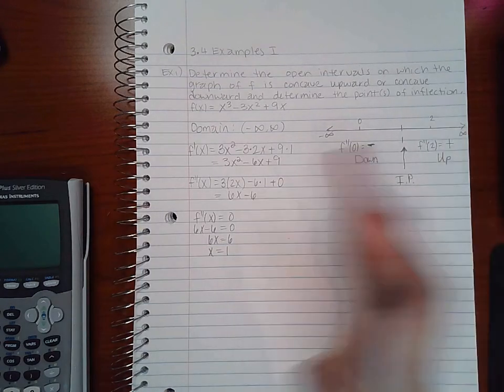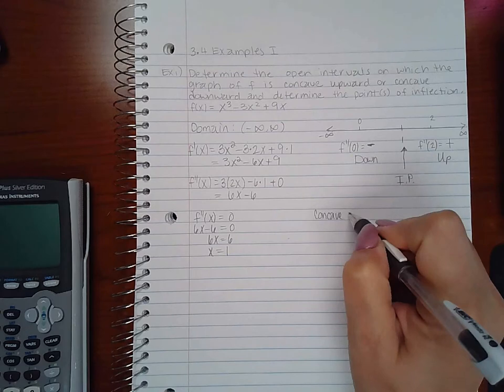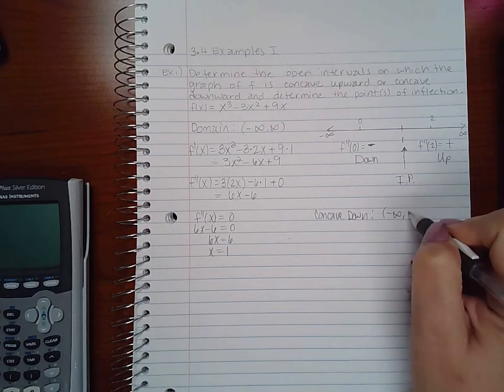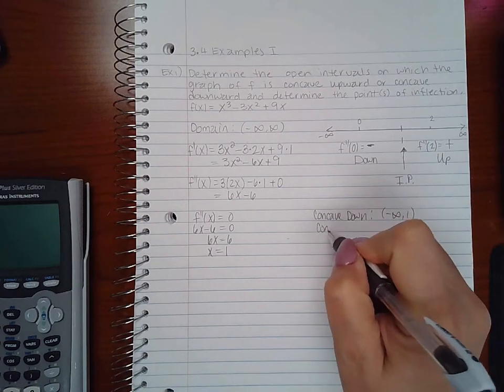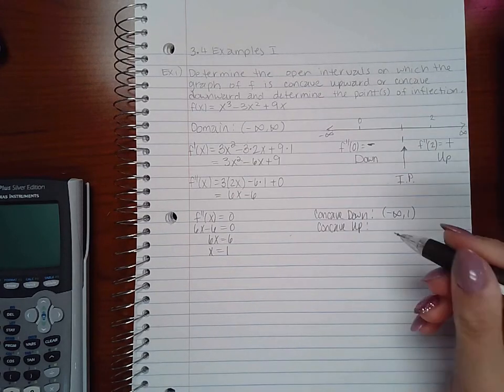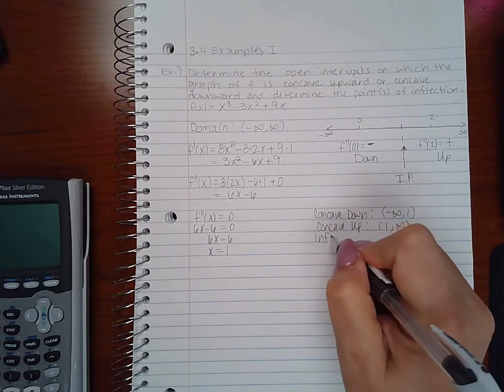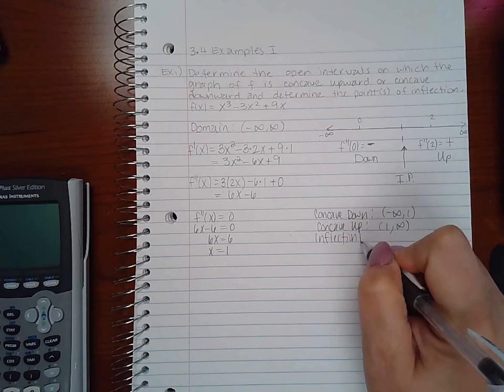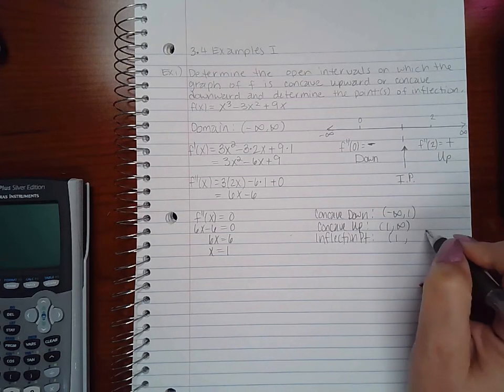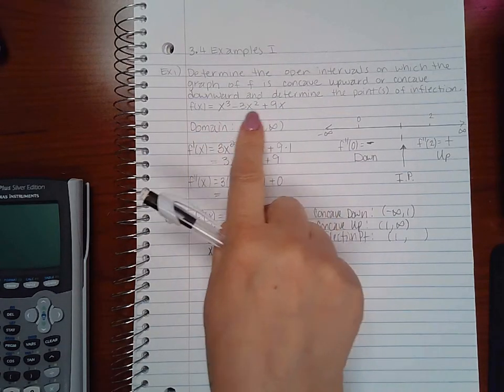So if I summarize my information, I have concave down on the interval negative infinity to 1, concave up on the interval from 1 to infinity, and I have an inflection point at the point 1 comma something. I'm not sure what the y value is at that point, so we will have to plug in 1 into our original equation.